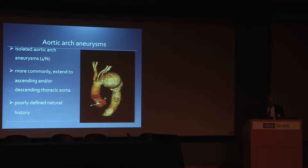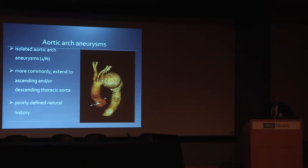My subject is aortic arch aneurysm, specifically endovascular repair of aortic arch aneurysms. What we know is that they have a fairly poorly defined natural history. They're fairly rare aneurysms, and we don't generally have isolated aortic arch aneurysms. Usually they creep into the proximal and ascending aorta, or they go down into the distal thoracic aorta, and that often changes the management.